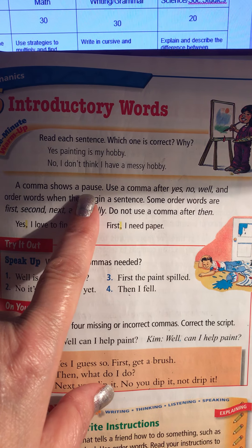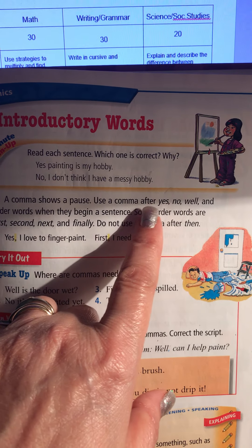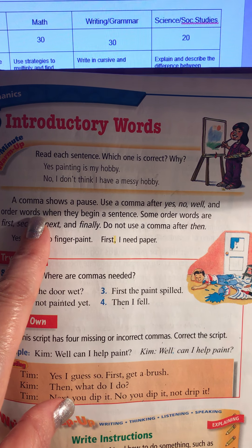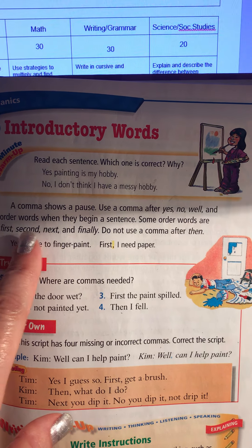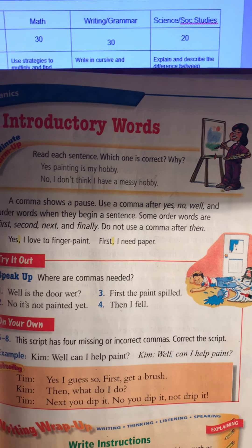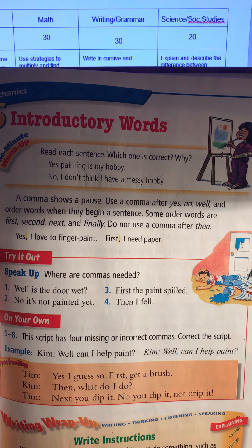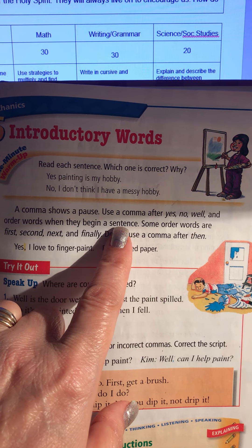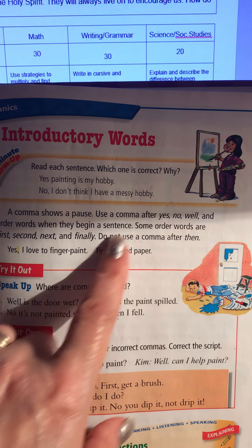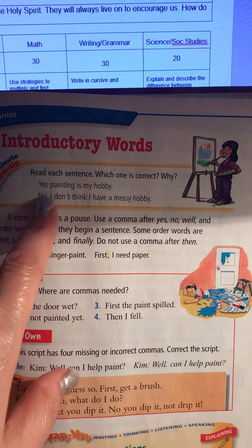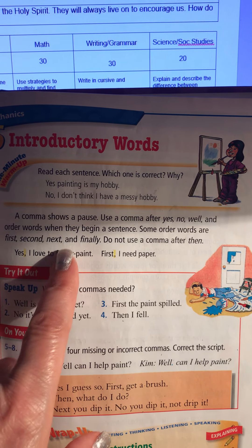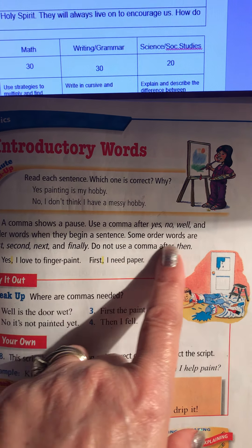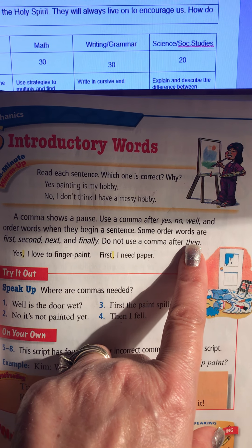A comma shows a pause. Use a comma after 'yes,' 'no,' 'well,' and order words like 'first,' 'second,' 'next,' and 'finally' — like when we do sequence and ordering — when they begin a sentence. We're talking about when these words are the very first word in a sentence; then you put a comma after them. But you never put a comma after 'then' when it's the first word.